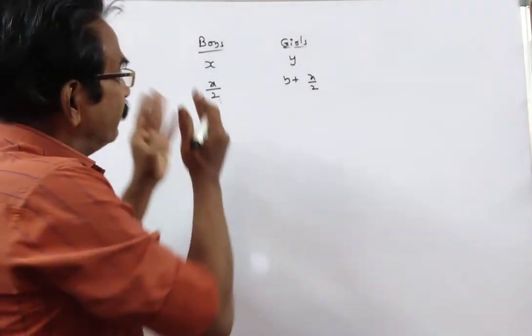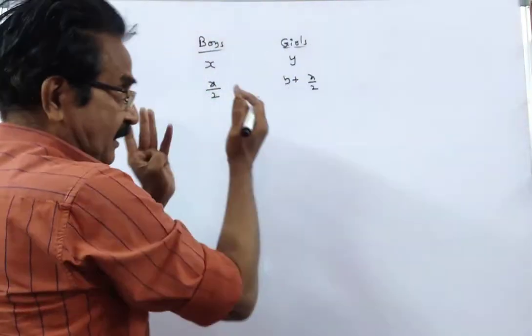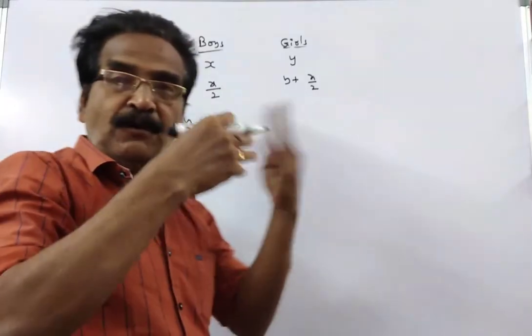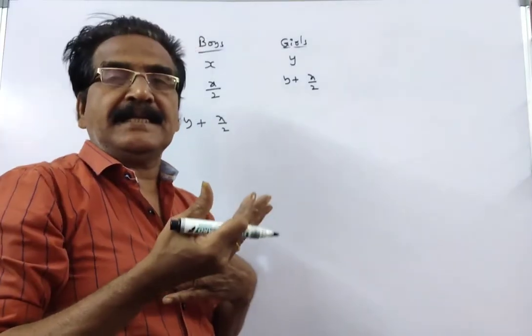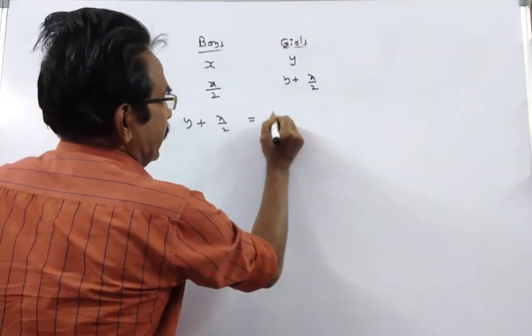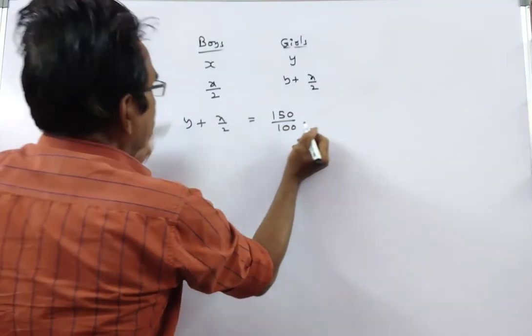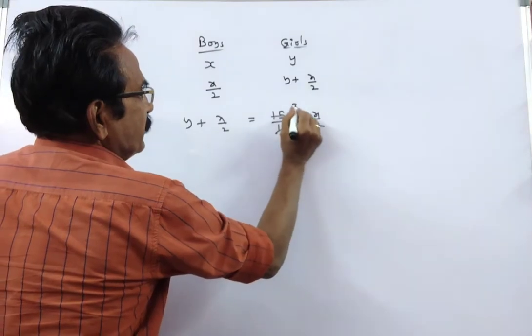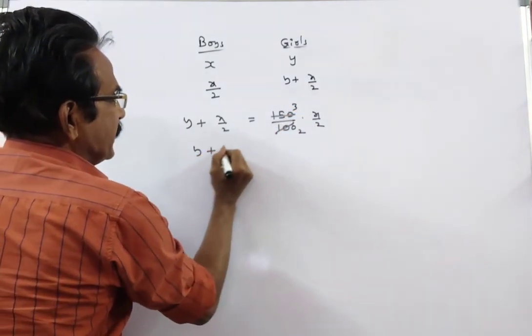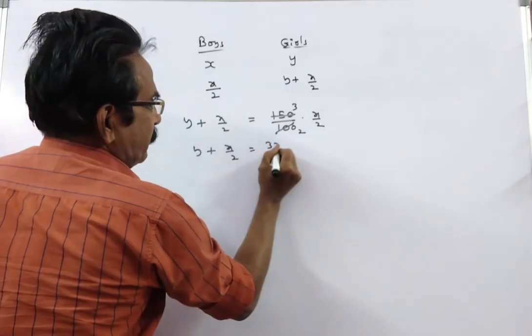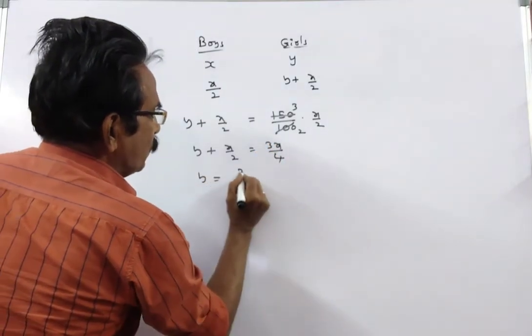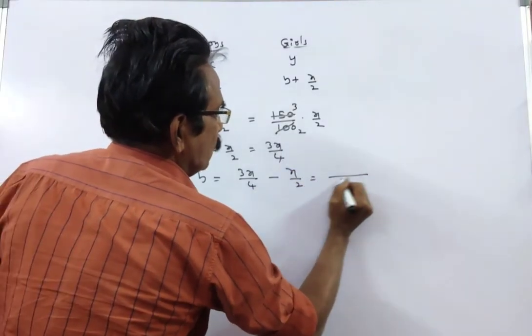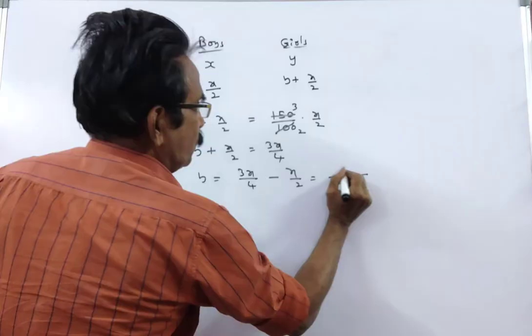Then it is given that if 50% of the boys were girls, then girls will be 50% more than the number of boys. That means 150% of the remaining boys, X by 2. Y plus X by 2 is equal to 3X by 4. Y is equal to 3X by 4 minus X by 2. This is equal to 3X minus 2X, X by 4.